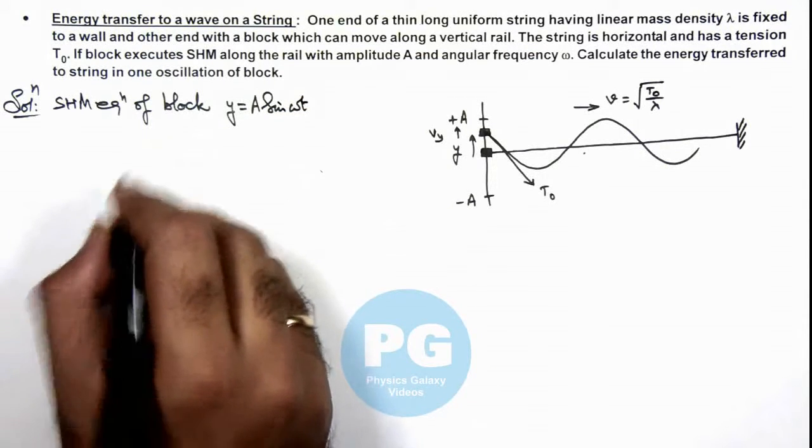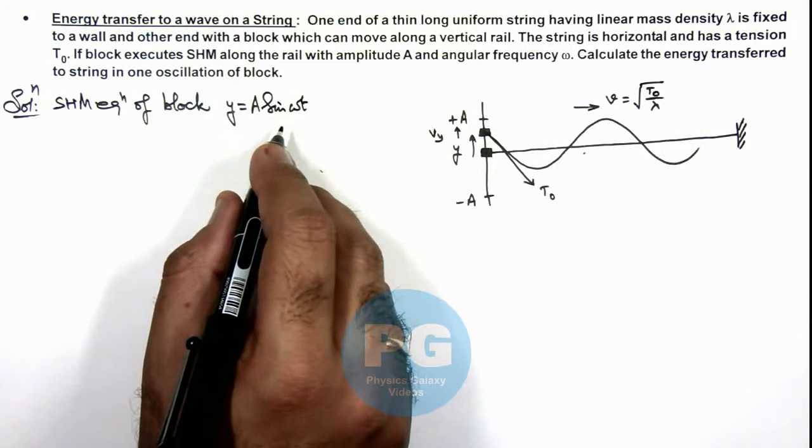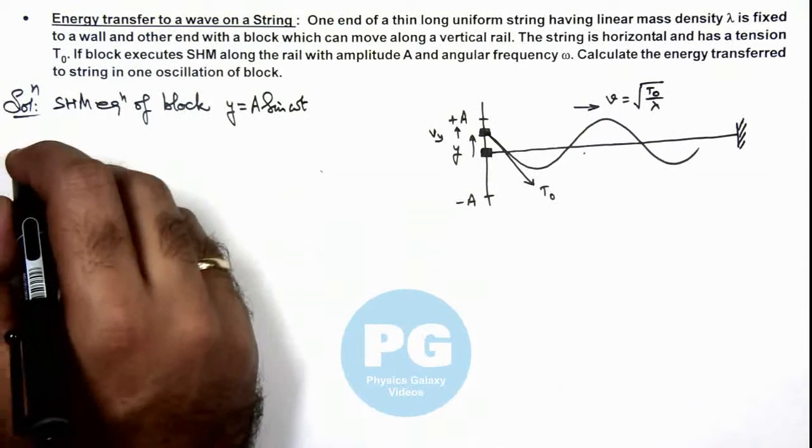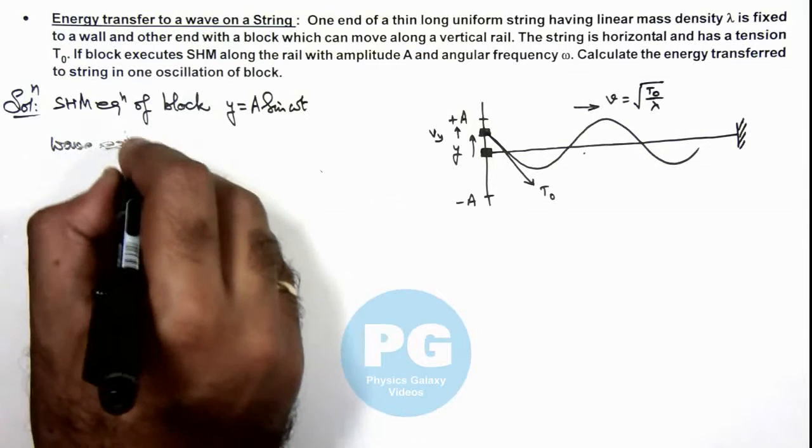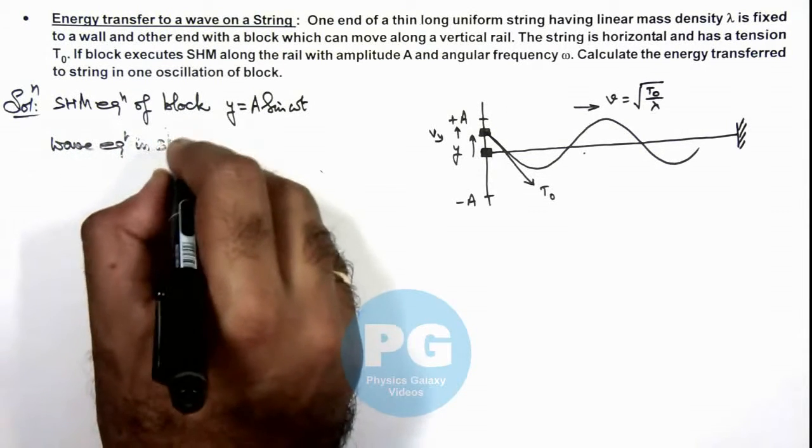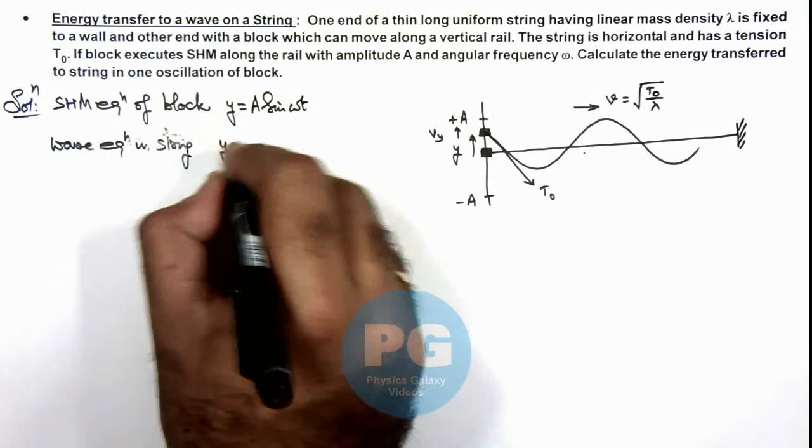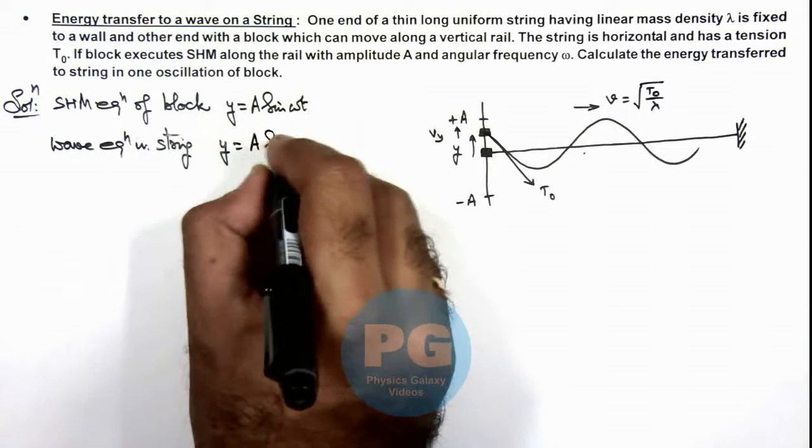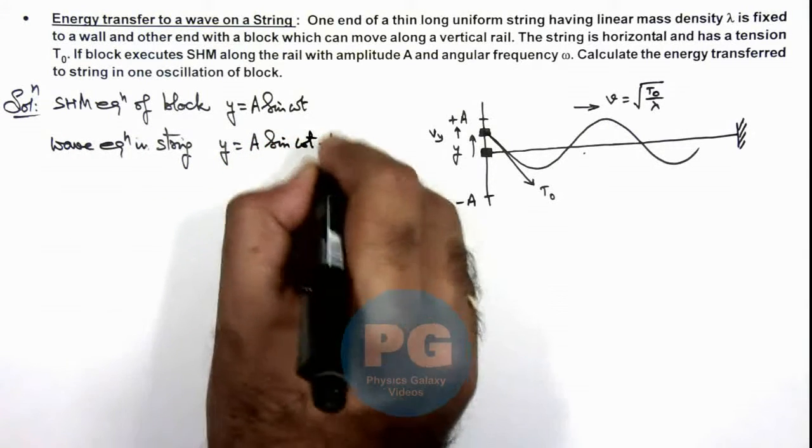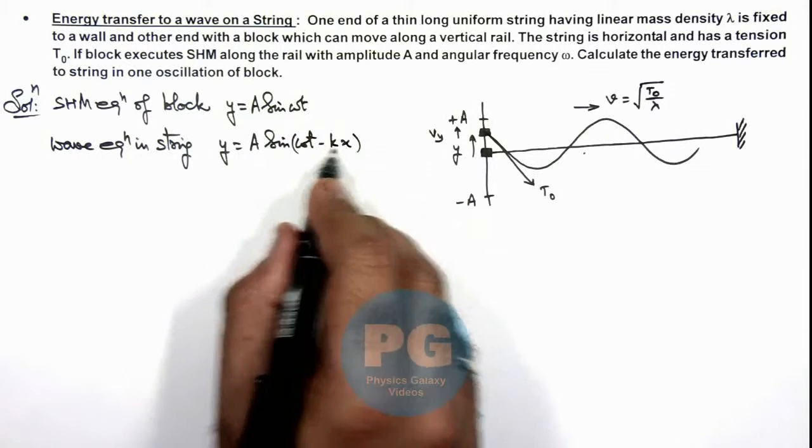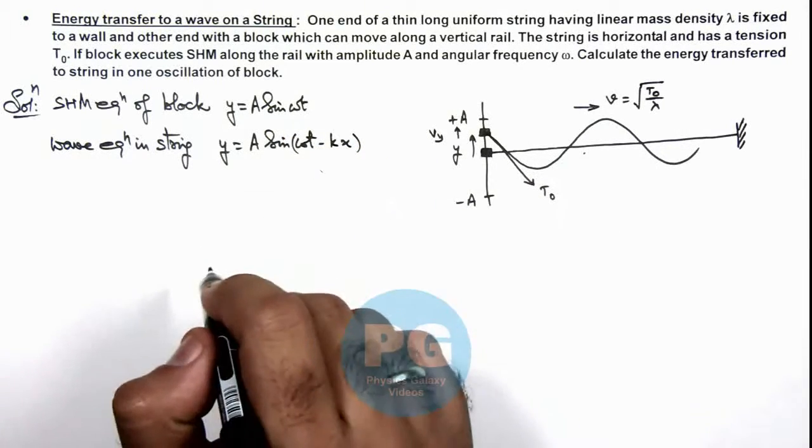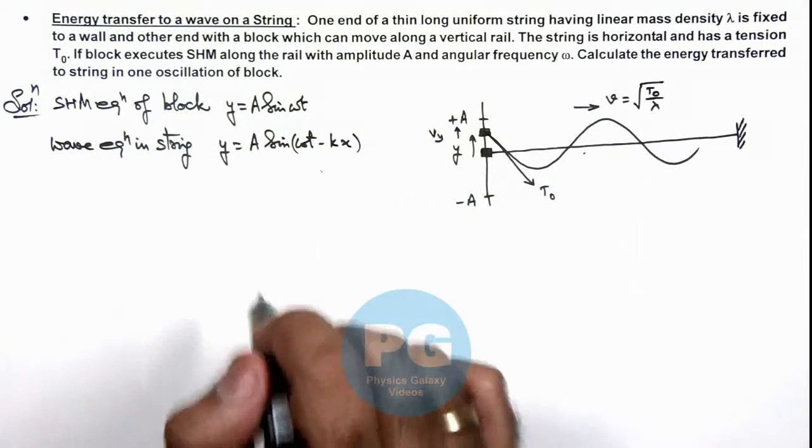If we talk about the wave which is propagating in the string, the wave equation as we already discussed in concept videos we can write as A sin(ωt - kx), where the value of k is ω/v or the angular wave number in the string.